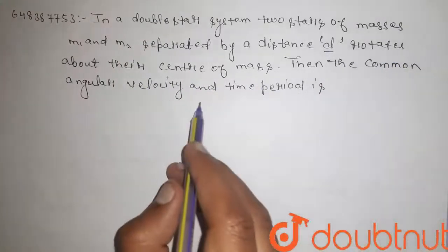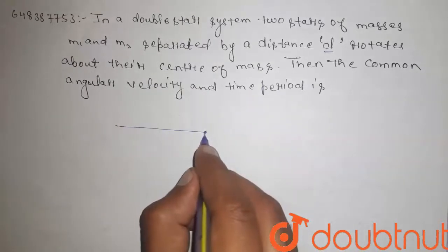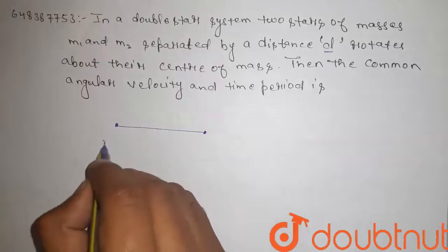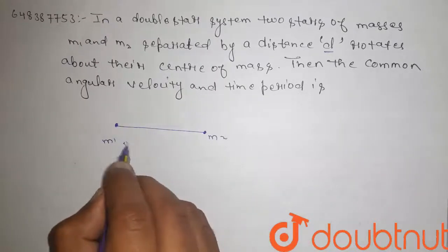Then the common angular velocity and time period is. Let's suppose this is the two star system m1, m2 separated by distance d.